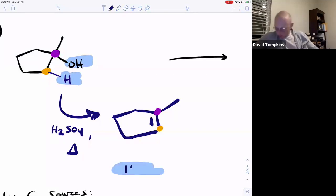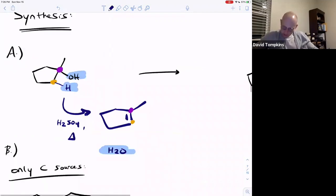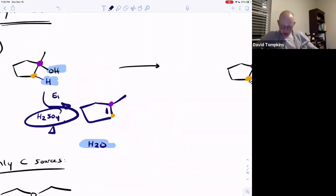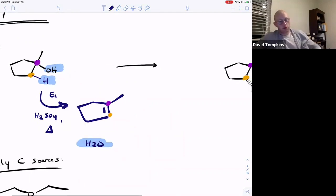And remember that removing water and raising the temperature favors the elimination. Okay, that's an E1 step, or an E1 mechanism, because we're in a strongly acidic solution, without strong base for E2.